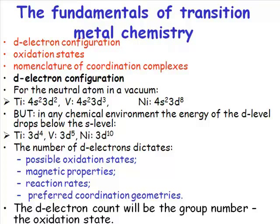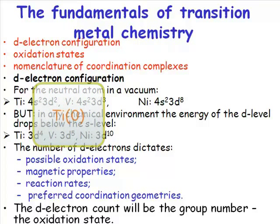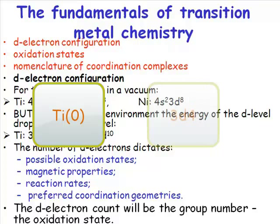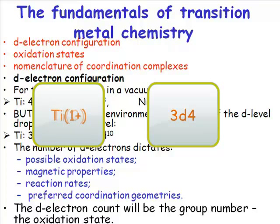It will tell us what the possible oxidation states are. So, let's take titanium, for example. Titanium has the possible oxidation states of, well, if we're doing coordination chemistry, it could be titanium 0, which it will be then 3d4. It could be titanium 1, would be 3d3. It could be titanium 2,